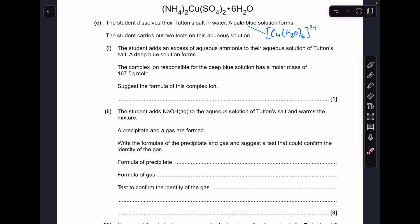And then the student adds an excess of aqueous ammonia and a deep blue solution forms. So the deep blue solution is due to the presence of this complex of copper here. Just be careful with your brackets. So we need square brackets around the ion and round brackets for the ligands. Do a quick check on the MR and it does actually add up to that 167.5.